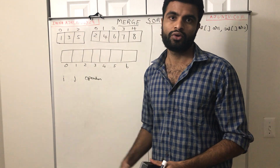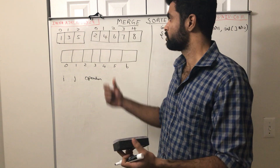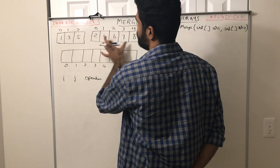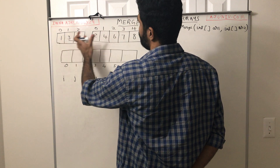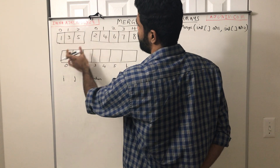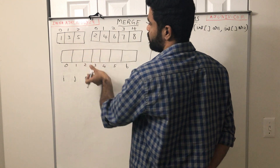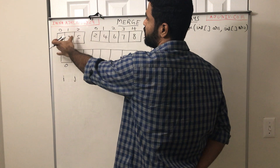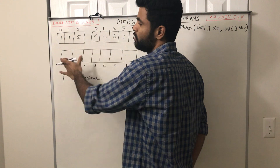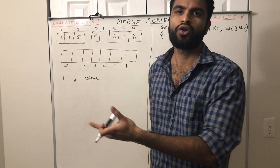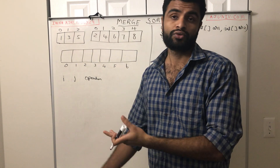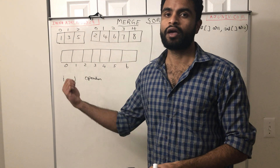Let's look at how we can merge two sorted arrays into a single array. Here I have two arrays: 1, 3, 5 and the other one is 2, 4, 6, 7, 8. Both of these are sorted and I have to merge them into one array. The brute force approach is to directly add all elements into a new array and then sort it, which would take O(n log n) time. But we can actually do this in linear time.